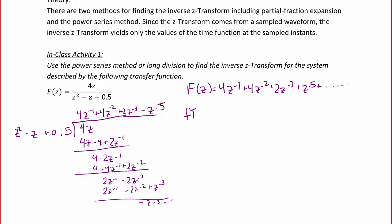In the n domain, the inverse Z transform of F of n would be 4 delta of n minus 1, plus 4 delta of n minus 2, plus 2 delta of n minus 3, plus delta of n minus 5, and so on.